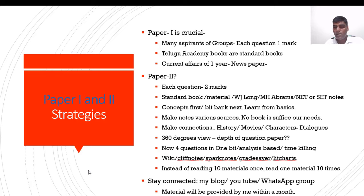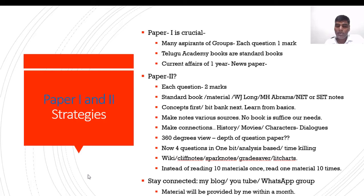I suggest going through the 360-degree view of English literature — I will record a separate video on this topic. In simple terms, have a comprehensive view of English literature: study the author's name, publisher, year of publication, famous dialogues, famous characters, famous quotations, scene-wise and act-wise incidents, and even figures of speech. The examiner may also ask you to arrange a particular author's works in chronological order.